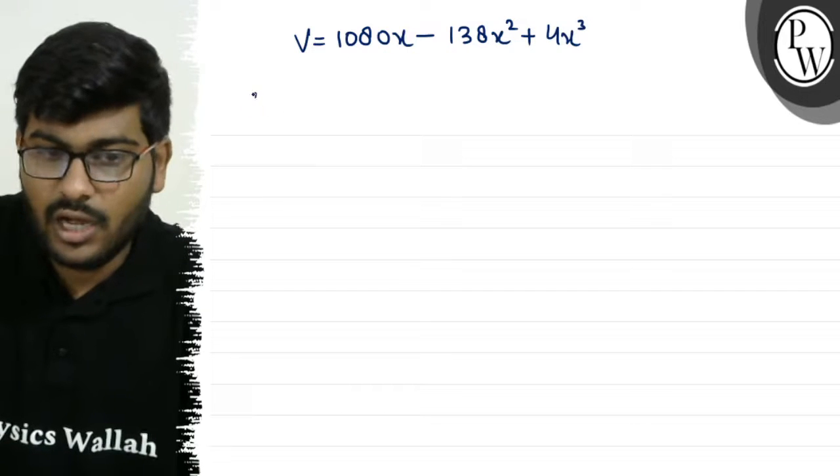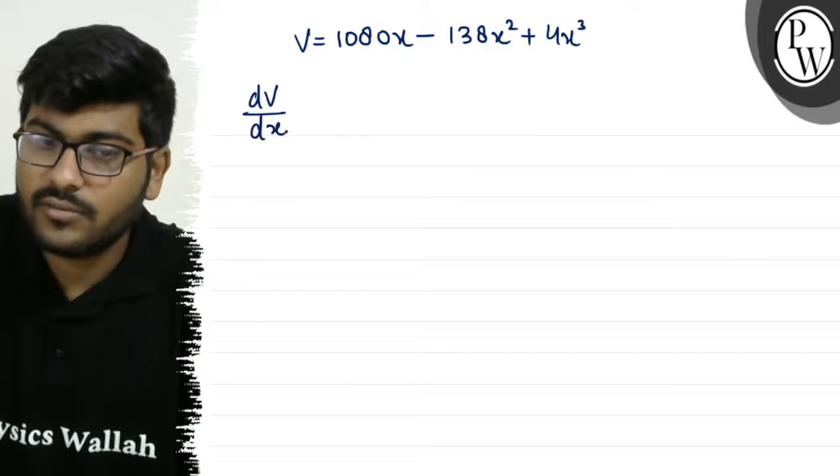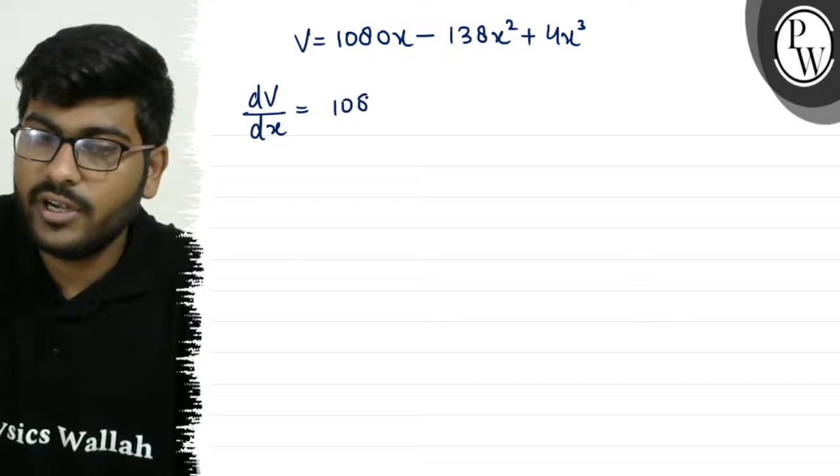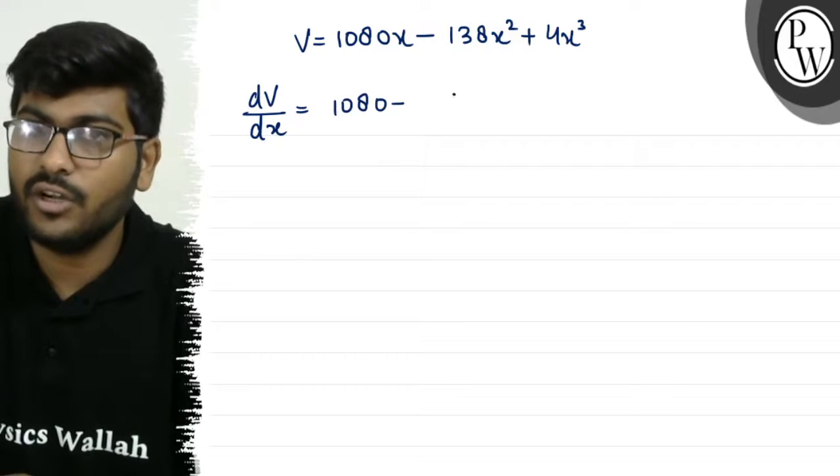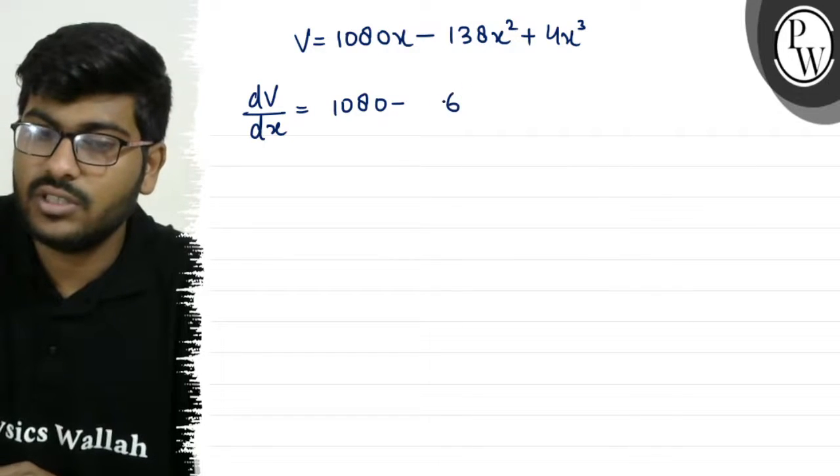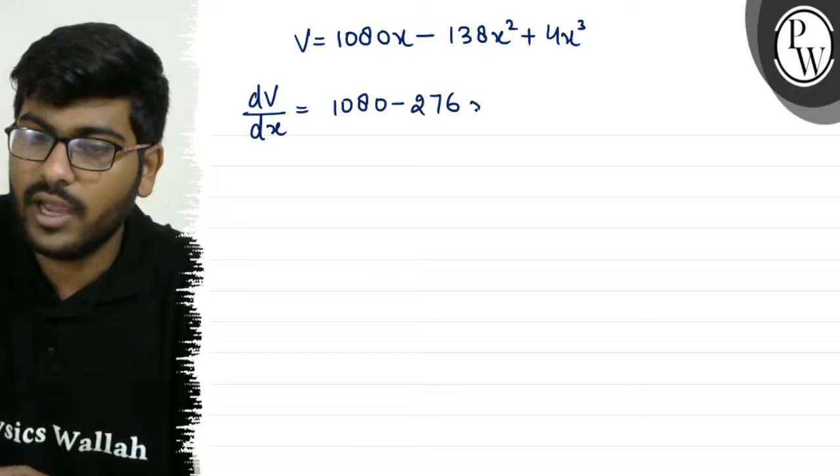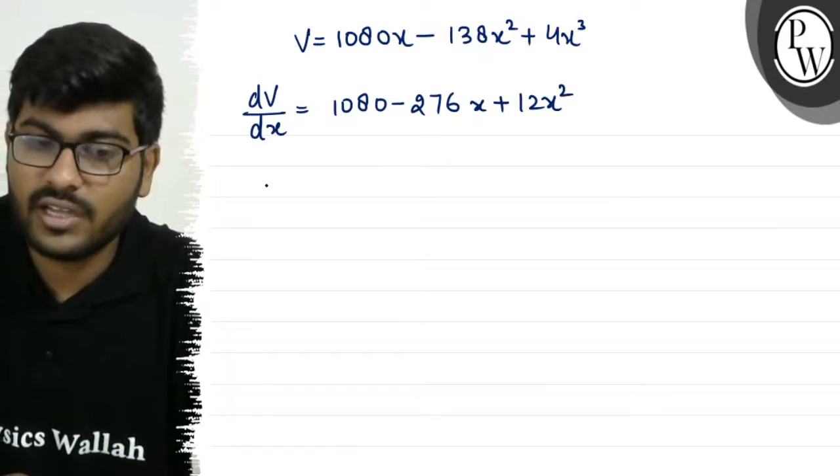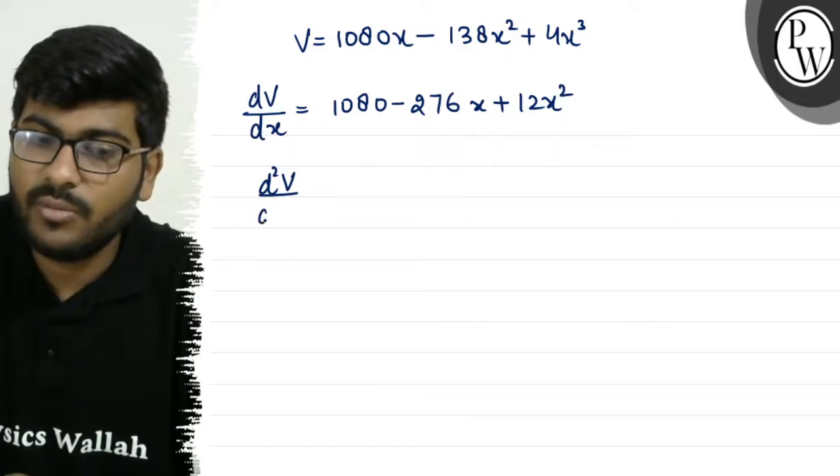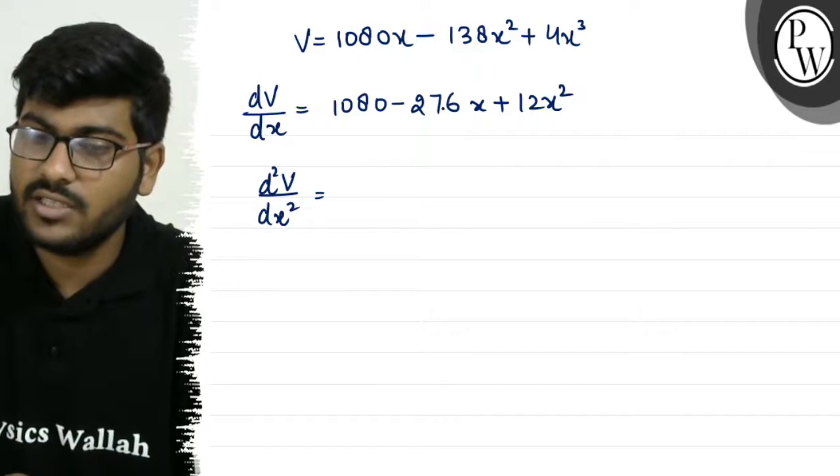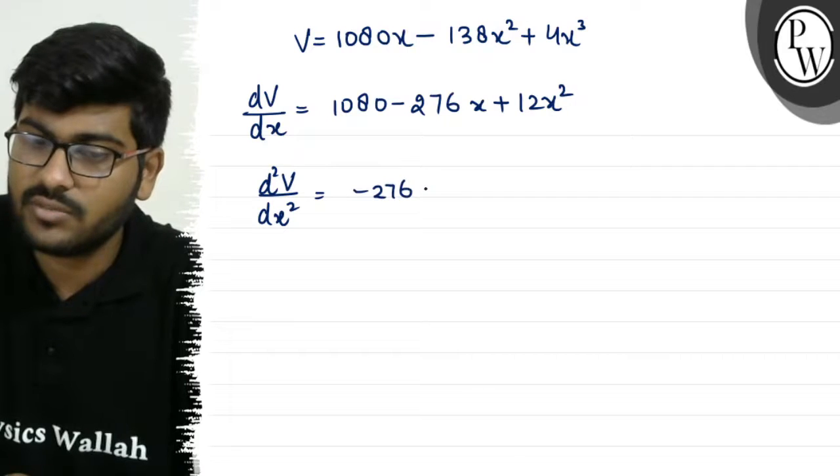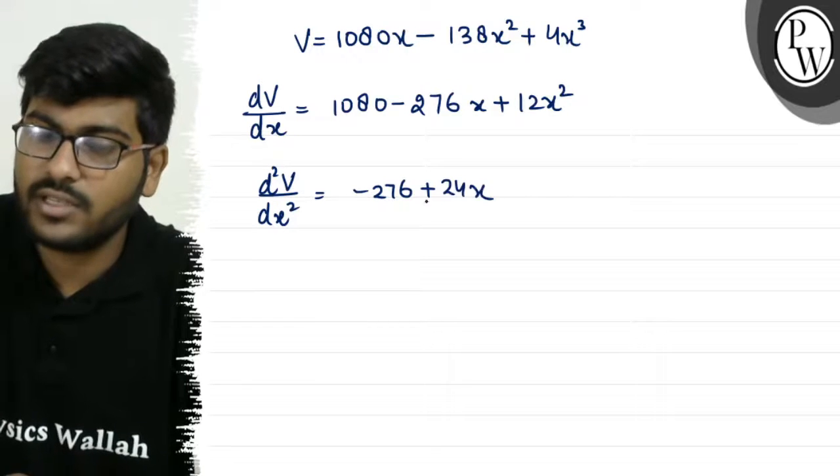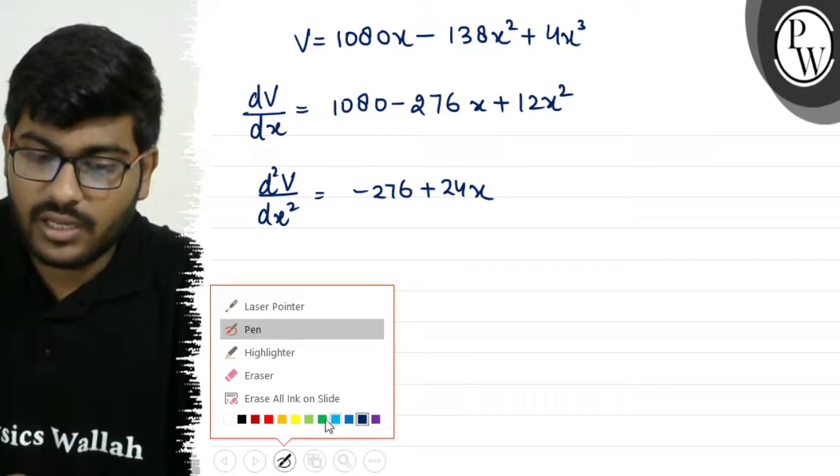Now we have dV/dx. This is 1080 minus 138x into 2 is 276, so 1080 minus 276x plus 12x². This is our dV/dx. Similarly, d²V/dx² is minus 276 plus 24x. Now we have to calculate when dV/dx equals 0.